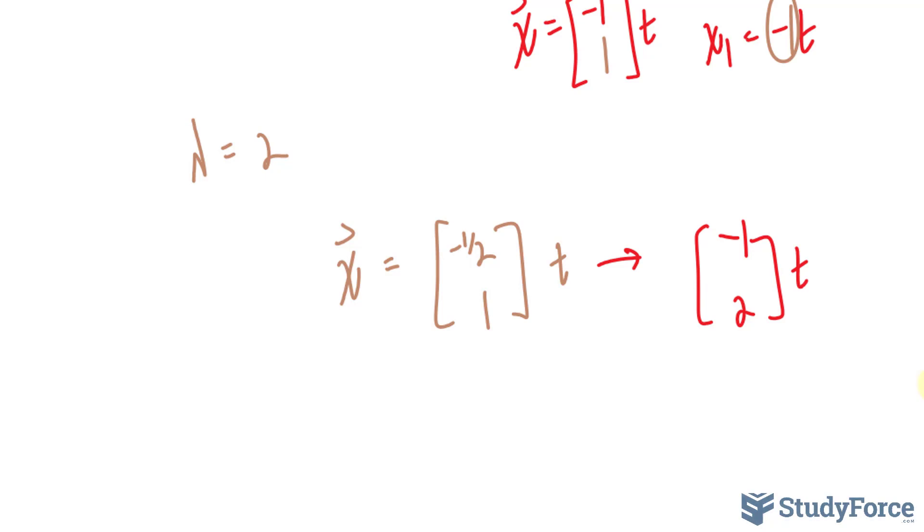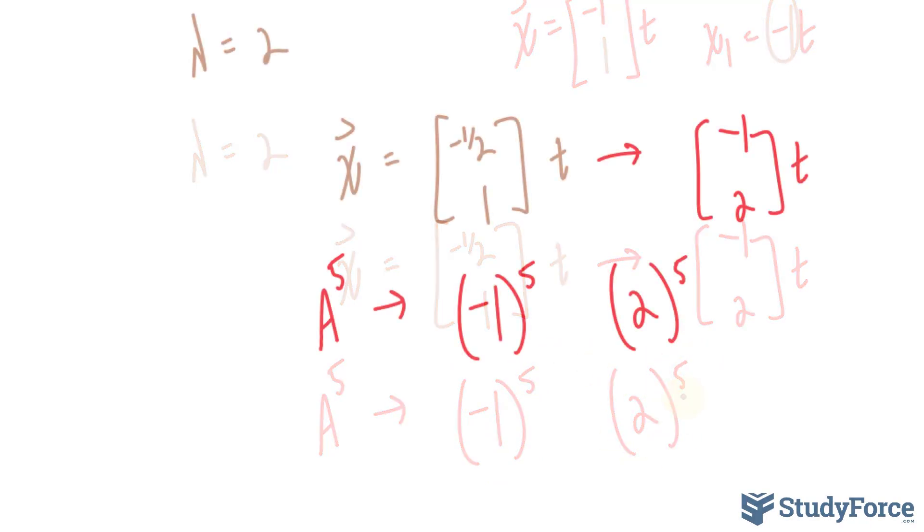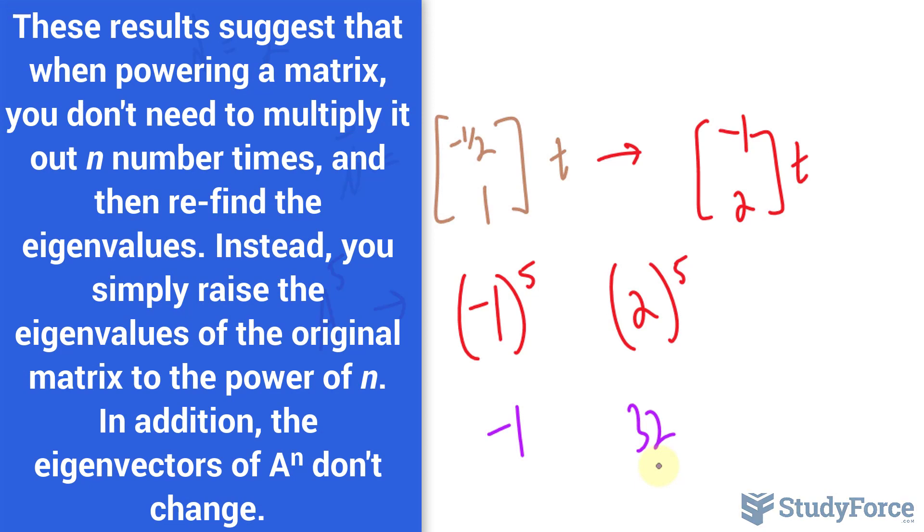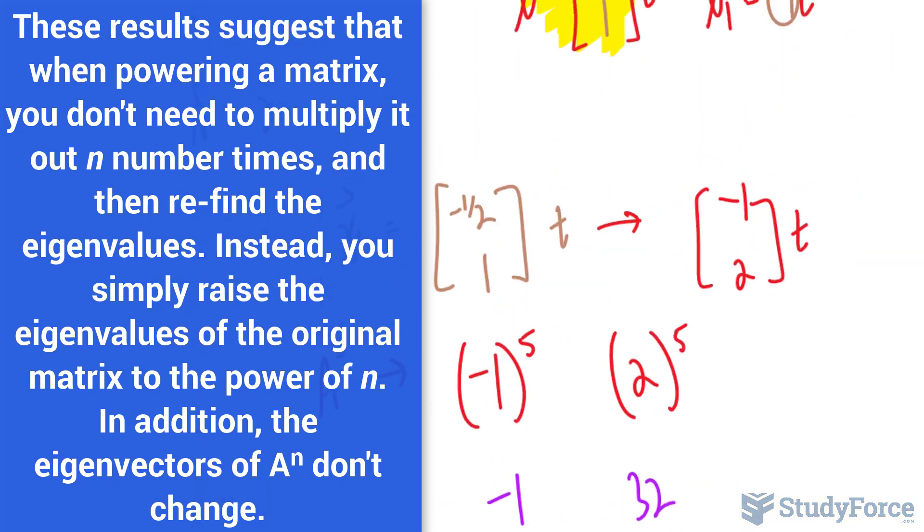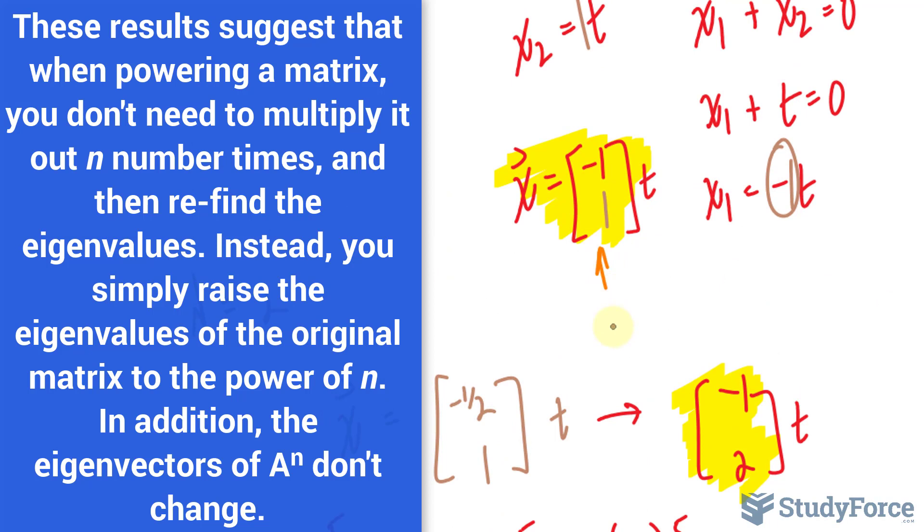Now to find the eigenvalues when we raise A to the power of 5, what you do in this case is take negative 1 and 2 and also raise them to the power of 5. By raising them to the power of 5, this becomes negative 1 and that becomes 32. So the eigenvalues of A to the power of 5 are negative 1 and 32, and the eigenvectors of A to the power of 5 are the ones that we found.